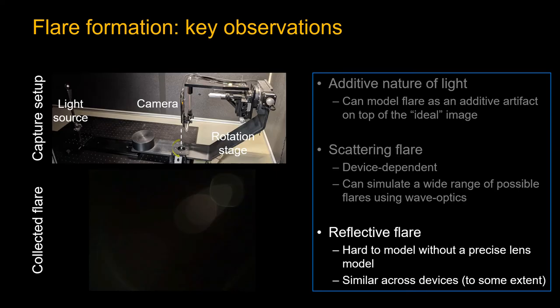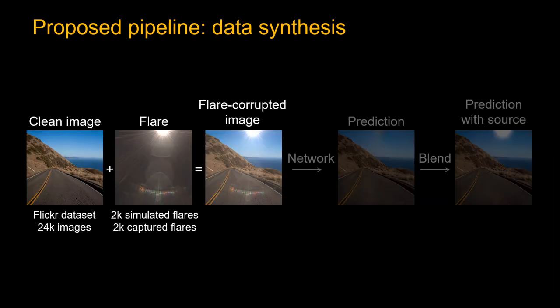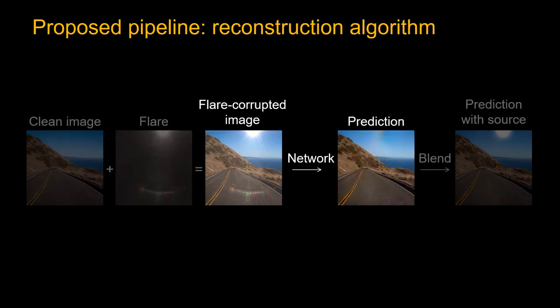Third, for the reflective flare, it is hard to model given that precise lens designs are not publicly available. But we find that the reflective flare patterns are similar across devices, so we collect data in a laboratory setting. The camera is rotated programmably to record flares from all viewing angles. We combine clean images and flare to synthesize flare-corrupted images. After that, a convolutional neural network is trained to recover the clean scene. Many network architectures are suitable for our task, and we find UNet works best for our case.